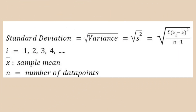Now let's talk about standard deviation. Standard deviation is simply the square root of variance, so to understand it we first need to understand variance. Standard deviation is the most commonly used measure of variability because it considers both the mean and the spread of the data. The formula is the square root of the summation of (xi minus x-bar) squared, all divided by n minus 1.